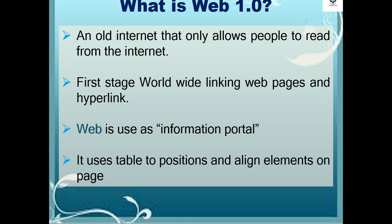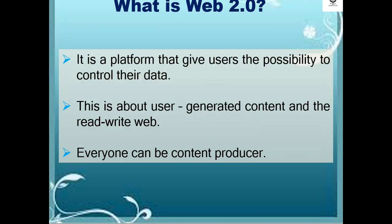Web 1.0 uses tables to position and align elements on a page. While Web 2.0 is a platform that gives users the possibility to control their data. This is about user-generated content and the read-write web.